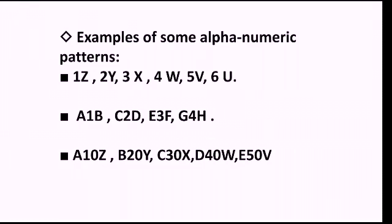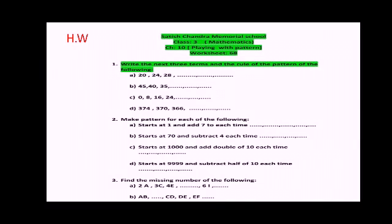Here I have given few examples of alphanumeric pattern. An alphanumeric pattern is a pattern which combines alphabets as well as numbers. The first example is: 1z, 2y, 3x, 4w, 5v, 6u — here I have combined alphabets as well as numbers. Now, worksheet number 68 is your homework. You will get the worksheet in PDF mode on your school website. Go and search it, try to practice and solve it. Thank you.